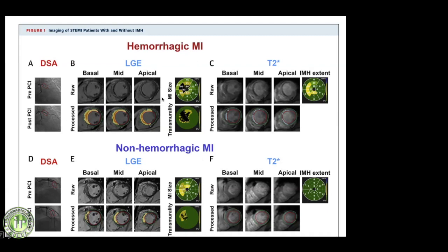It is important to take the entire left ventricle in short axis views — basal, mid, and apical — when assessing late gadolinium enhancement images and calculating T2-star values. T2-star values less than 20 milliseconds were classified as hemorrhagic MI, while values more than 20 milliseconds were classified as non-hemorrhagic MI.